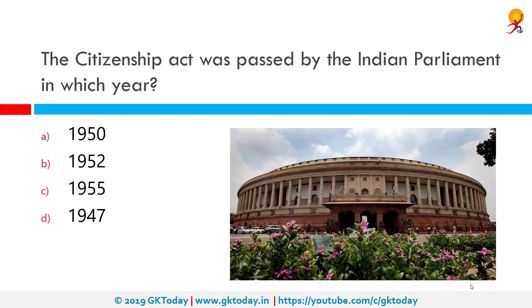The Citizenship Act was passed by the Indian Parliament in which year? The correct answer is 1955. An act to provide for the acquisition and determination of Indian citizenship, the Citizenship Act of 1955 is the exhaustive law relating to citizenship in India. The conferment of a person as a citizen of India is governed by Articles 5 to 11 of Part 2 of the Constitution of India.